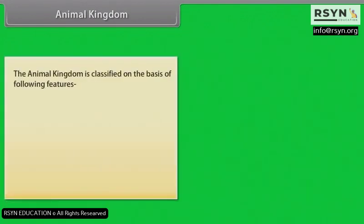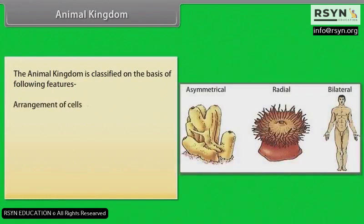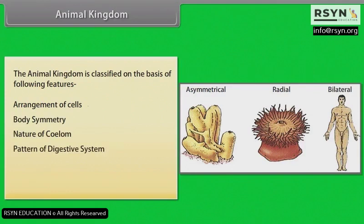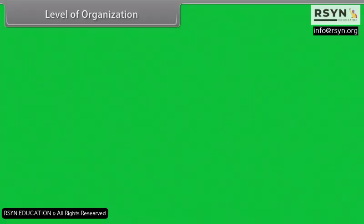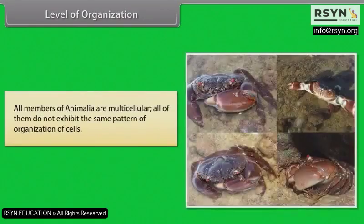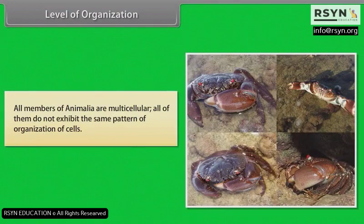The animal kingdom is classified on the basis of the following features: arrangement of cells, body symmetry, nature of coelom, pattern of digestive system, pattern of circulatory system, and pattern of reproductive system. All members of Animalia are multicellular, but all of them do not exhibit the same pattern of organization of cells.